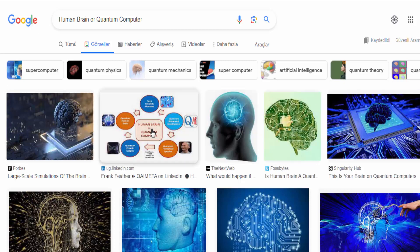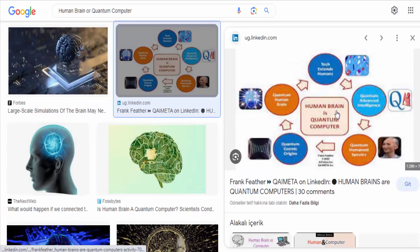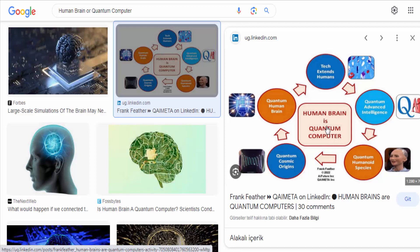The human brain and quantum computers are both remarkable in their own ways, but they are fundamentally different in terms of their structure and capabilities.